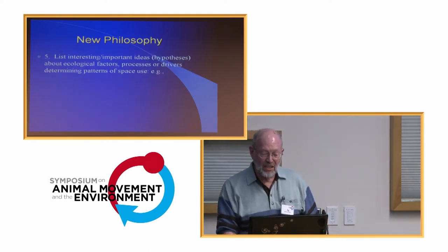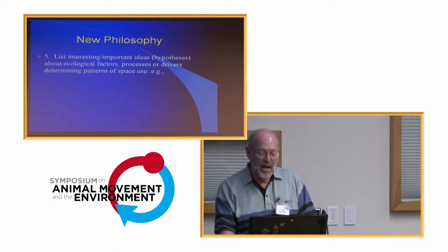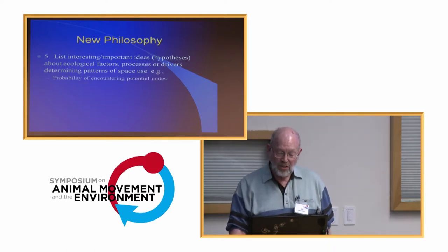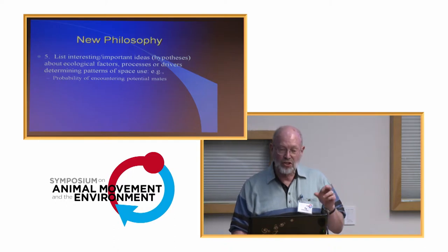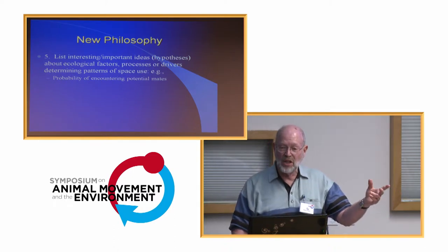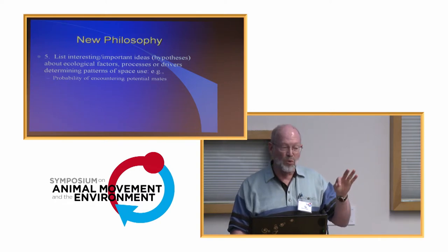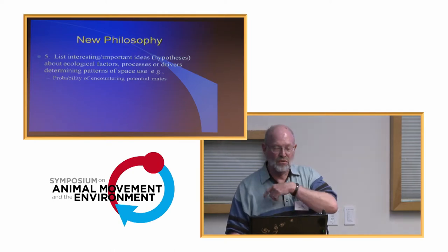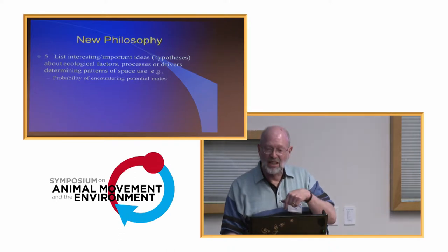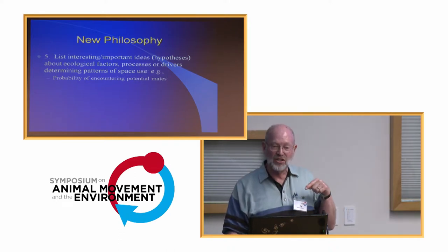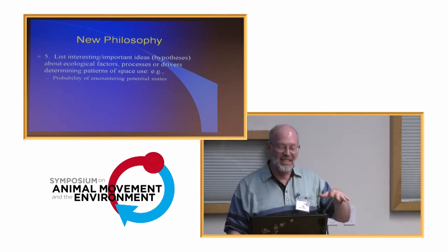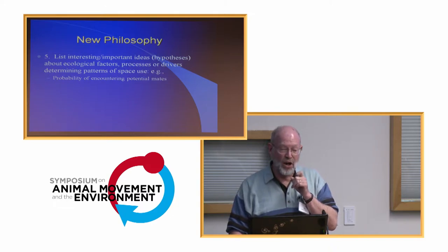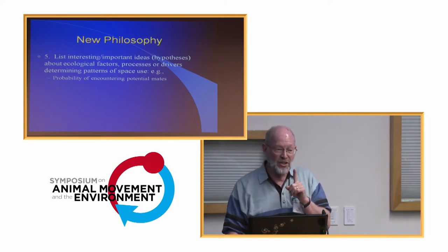The fifth point: we want to begin by listing interesting important ideas or hypotheses about the ecological factors, processes, or drivers determining patterns of space use. For example, what's the probability of encountering potential mates? For rhinos, Janet Rocklow did surveys through Matobo National Park weekly and plotted locations of every female she saw. We could build a kernel map of the density of females through time — a very potentially important predictor for where you find male rhinos, because that's what they're doing: protecting those females.